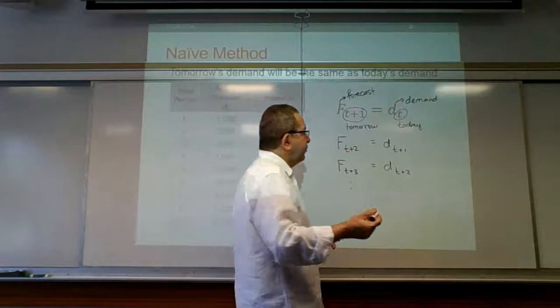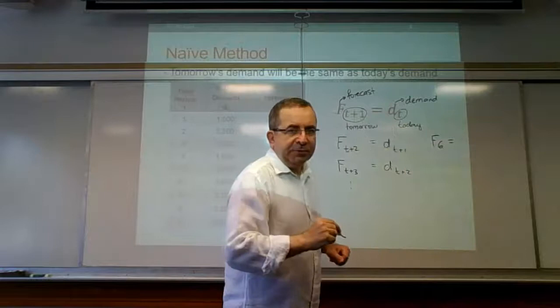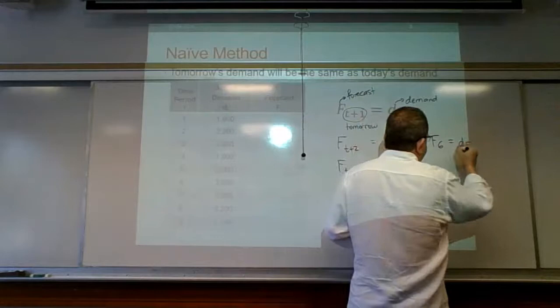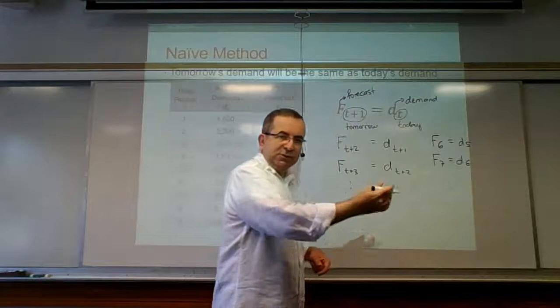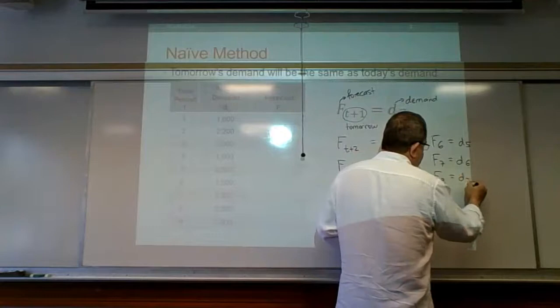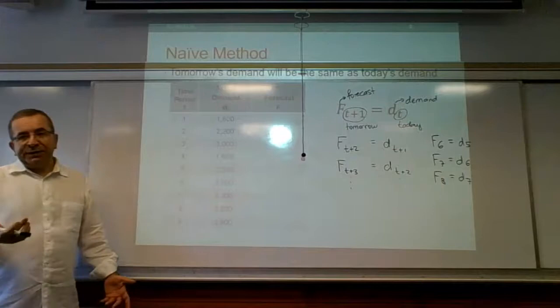Let's put in actual numbers. F6, the forecast for period 6, equals D5. F7 equals D6 — we're just going back one period. And then F8 equals D7. So this is simply what this formula means.